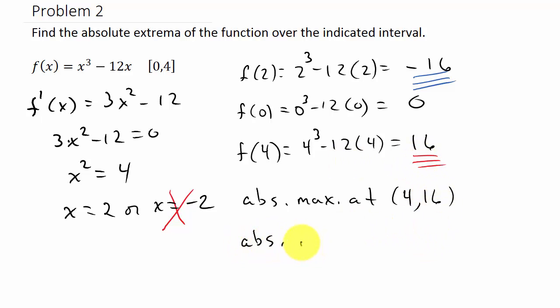And then we have an absolute minimum at x equal 2. And our y value—see, we've already plugged the 2 into the original function. And that would be negative 16.